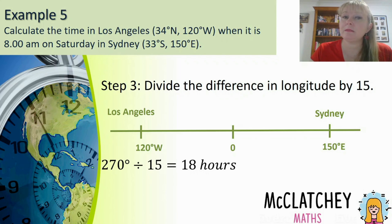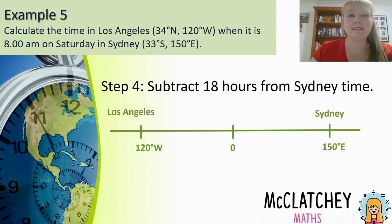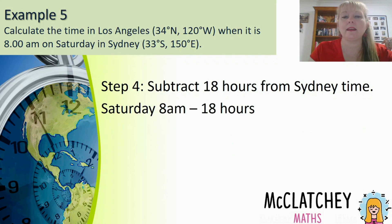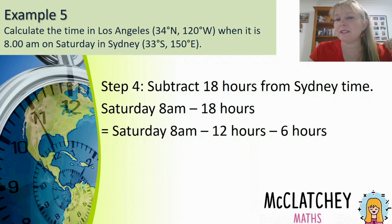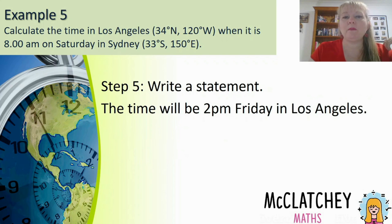Now we subtract that 18 hours from Sydney's time to find the LA time. LA is behind on the timeline. Taking 18 hours away from 8am Saturday: break 18 into 12 plus 6. Subtracting 12 hours flips to the day before — 8pm Friday. Subtracting 6 more hours gives Friday 2pm. Always finish with a statement: the time will be 2pm Friday in Los Angeles.